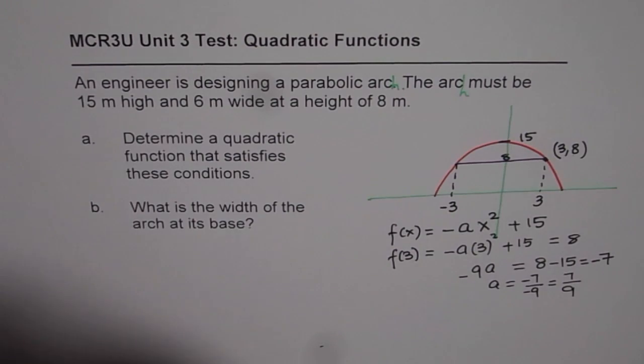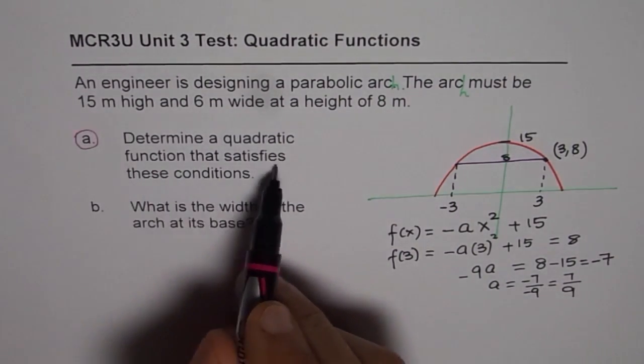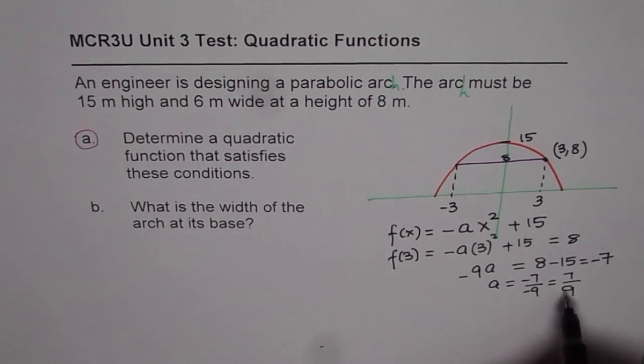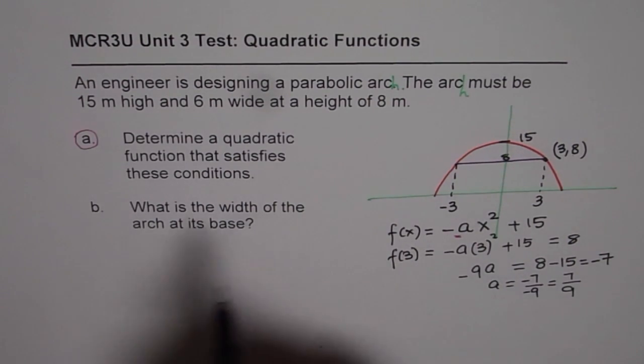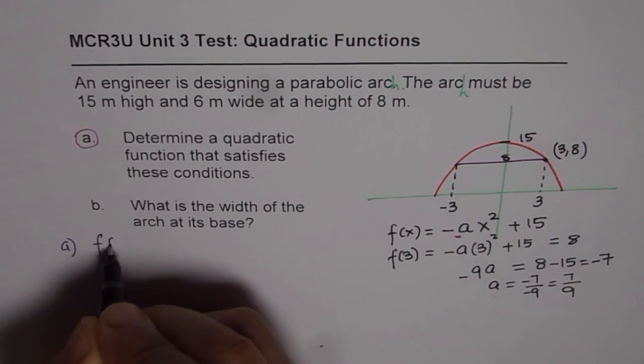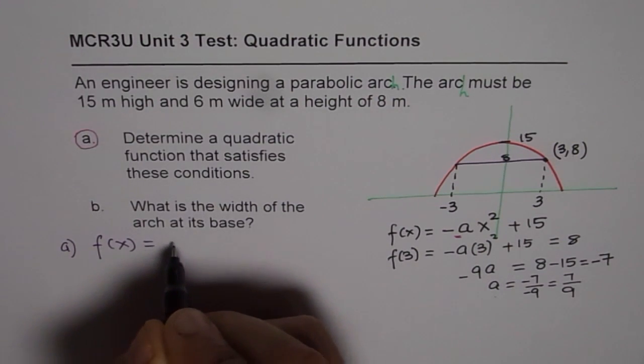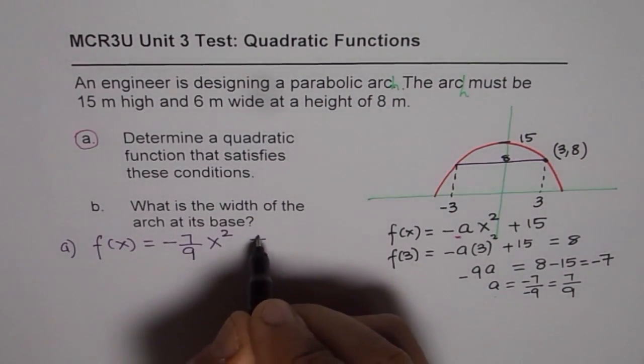So the first part of the question here is determine the quadratic function that satisfies these conditions. So a is 7 over 9. We can substitute this value here and get the quadratic function. So we can write down the answer for part a, which is f(x) = -7/9 x² + 15.